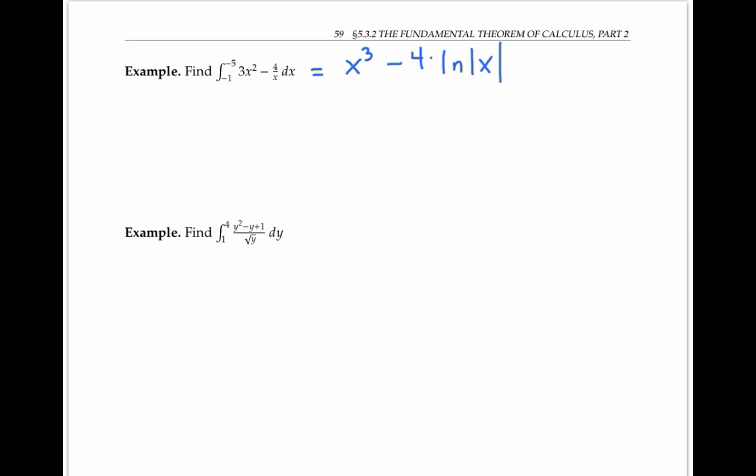Now we need to evaluate this antiderivative on the endpoints of -1 and -5. And we usually write this as a vertical line with a -1 at the bottom and a -5 at the top to mean evaluation.